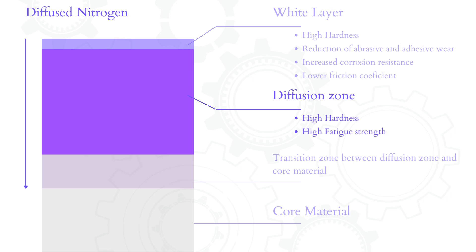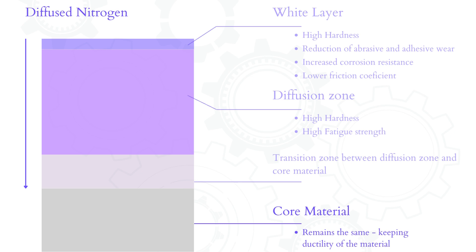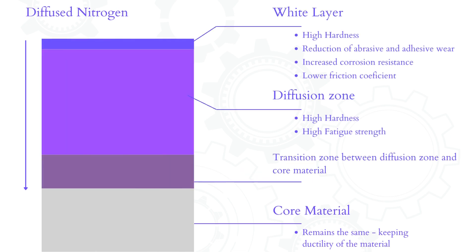The diffusion zone greatly increases the life cycle of nitrided parts. The transition zone, between the diffusion zone and the core material, is similar to the diffusion zone but with far less nitrogen reaching these depths. Below the layer there is the core material, which remains as before nitriding. This is very important because maintaining the core means the material remains ductile but with enhanced hardness at the working surfaces.